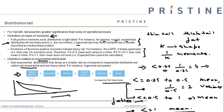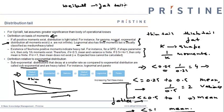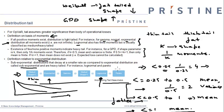Weibull distribution with shape parameter greater than 1 is a thin-tailed distribution — it is even thinner than the exponential distribution. Then comes Gamma distribution, then Weibull distribution with shape parameter less than 1. So Weibull distribution becomes fat-tailed when the shape parameter reduces. However, GPD becomes fat-tailed when shape parameter increases. Followed by log normal, which is the boundary between thin-tailed and thick-tailed distributions. And on the other end of the spectrum we have Pareto, GPD, and Burr distribution.